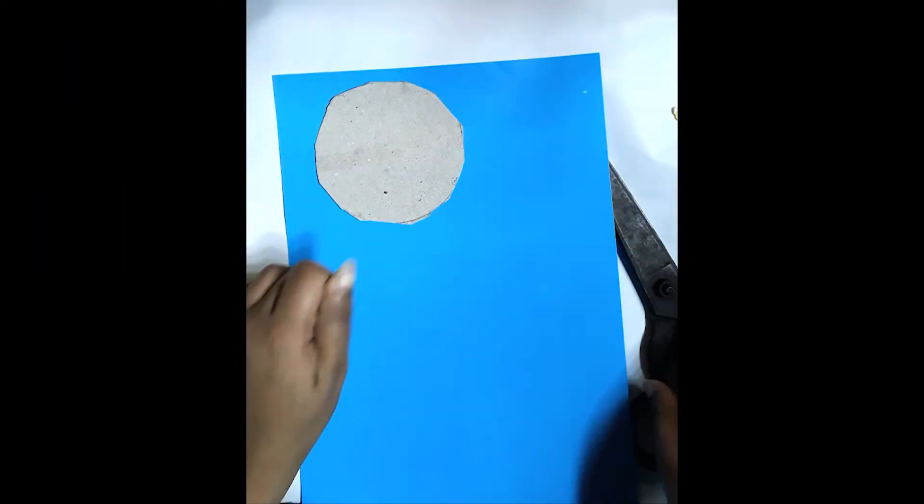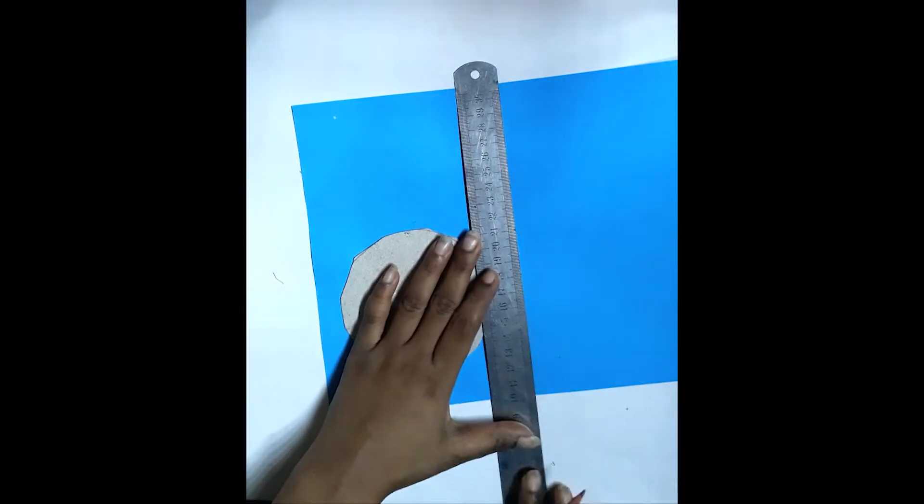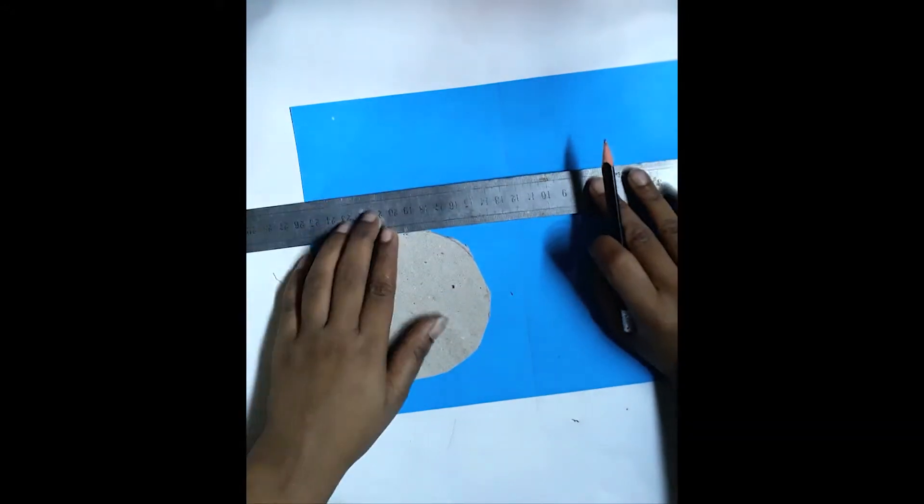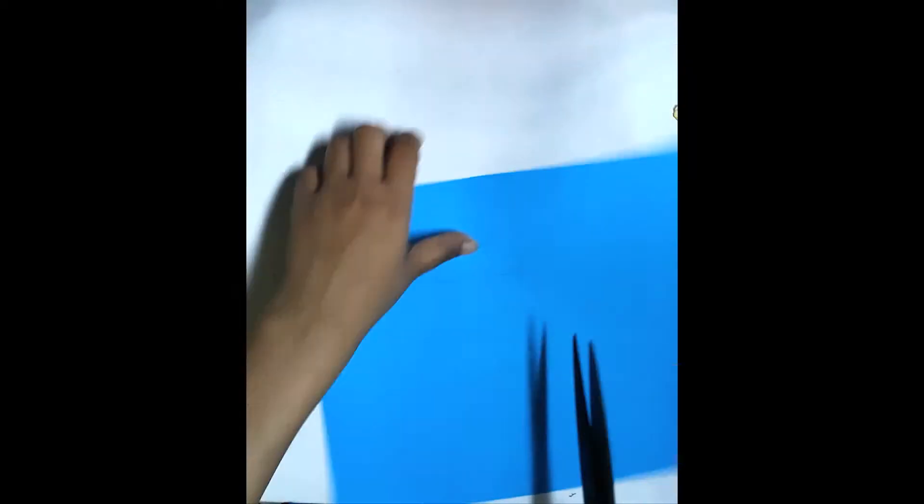Take a blue color paper and put the hard paper on it. Now take a scale and draw two margins which is shown in the video. Cut it through the margin line by scissor.